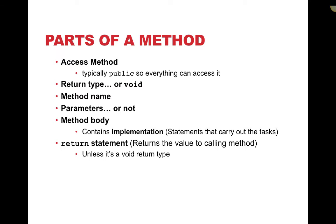Next in our method signature line we have a method name. Typically the method name is all lowercase, except if there are additional words, that word is uppercase. Then we have parentheses, and inside those parentheses are called parameters — those are things that the method takes and uses in its execution. We don't have to have parameters; there'll be some cases where we don't. We have a method body between the two curly brackets containing the implementation or tasks carried out by the method. Finally, if there's a return type there will be a return statement — the last line of our methods is typically return, unless it's a void method.